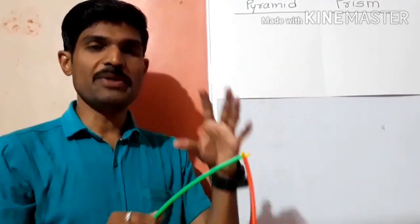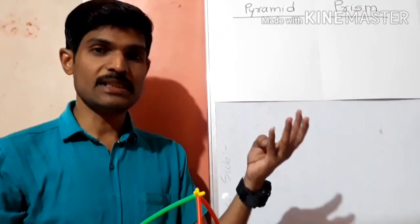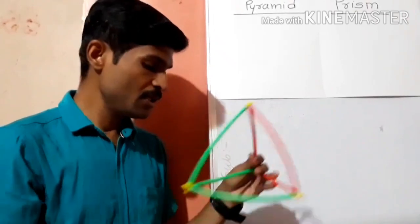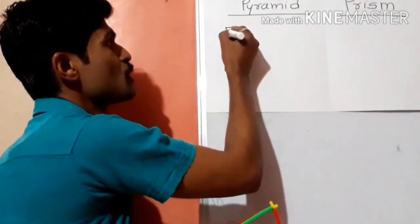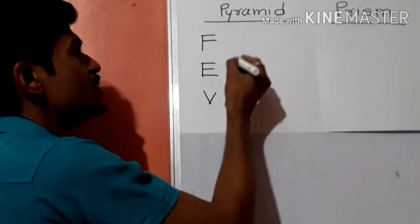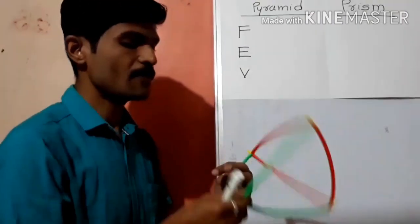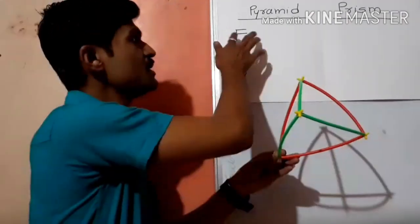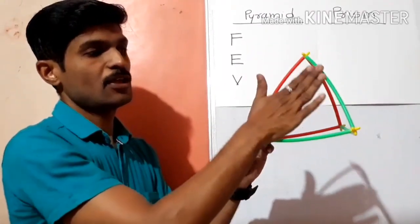In three dimensional geometry we measure faces, edges and vertices. Let's see what faces, edges and vertices are with an example. A face means one flat surface of the shape.